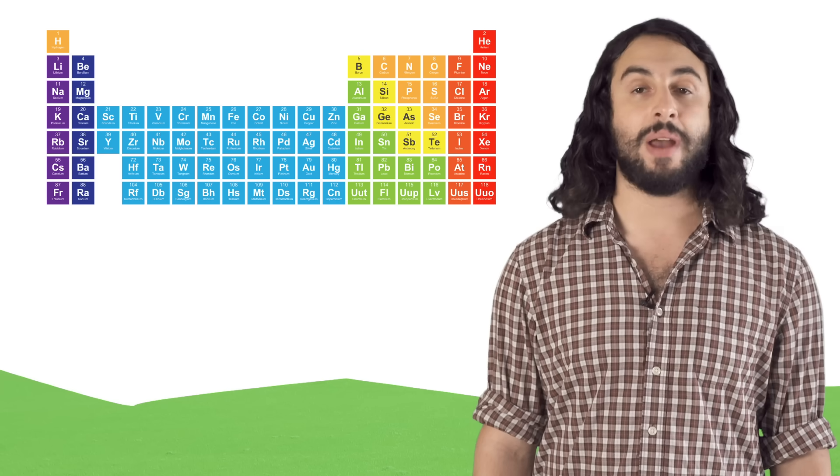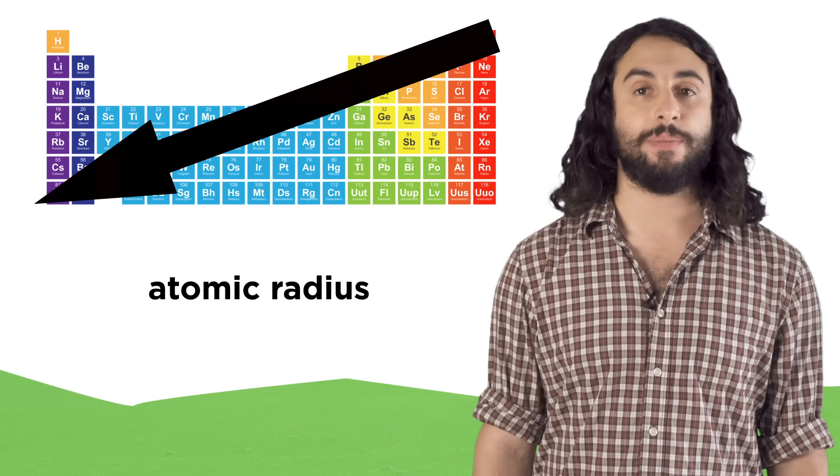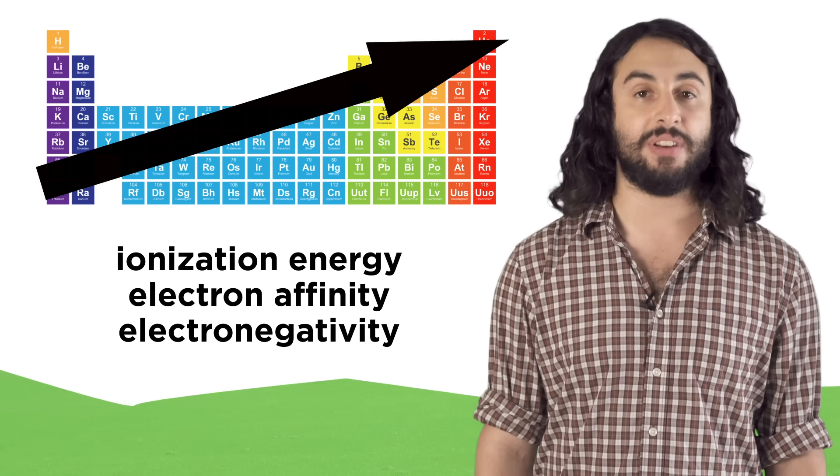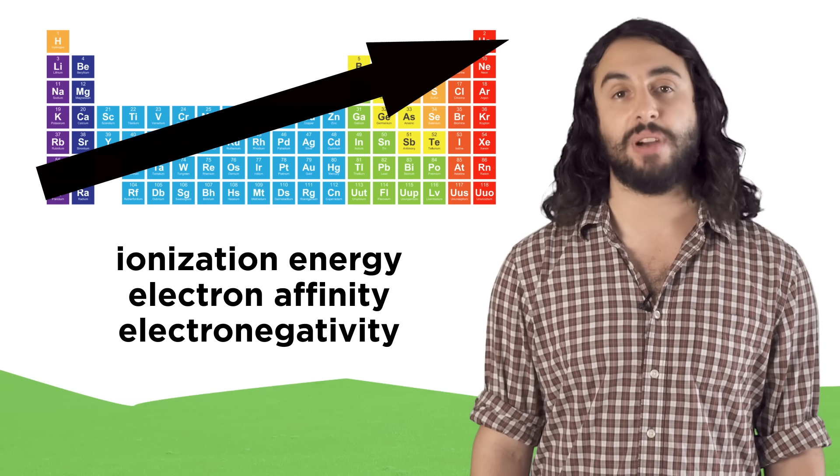So the trends to remember are atomic radius which goes this way, as well as ionization energy, electron affinity, and electronegativity which all go this way. Let's check comprehension.